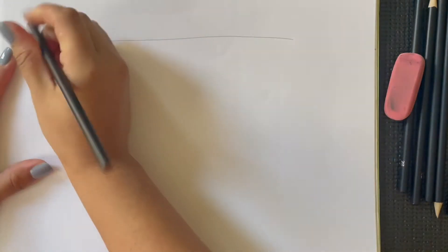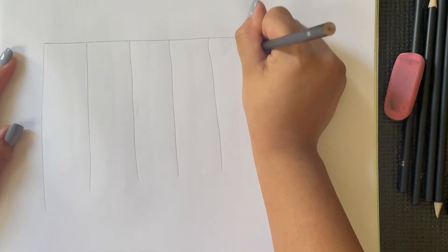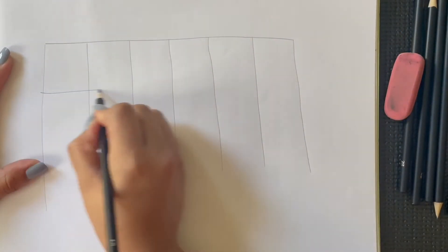We will start by drawing six columns and four rows. Empezaremos dibujando seis columnas y cuatro hileras.